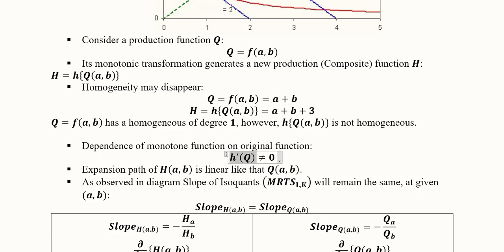This means that if we take the derivative of the monotonically transformed function with respect to Q, it will not equal zero. If the derivative were zero, it would mean there is no relationship between the dependent and independent variable. So dH/dQ ≠ 0, because the monotonically transformed function is dependent on the original function.